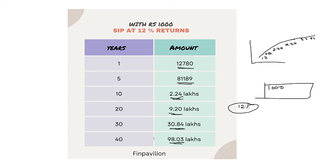Your compounding really explodes from 20 years to 30 years — from ₹9.20 lakhs it goes to ₹30.84 lakhs and then to ₹1 crore. You should be consistent and not miss your SIP to reach these levels. This was just ₹1,000 per month for 40 years at a 12% return.